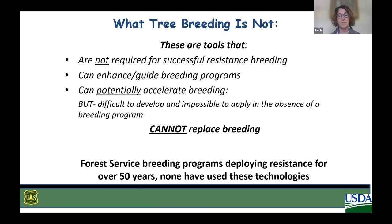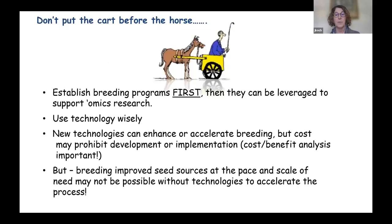The Forest Service has had breeding programs deploying resistance for over 50 years, and so far none have used these technologies. It's important not to put the cart before the horse when talking about breeding programs. What you're doing today — identifying trees that can potentially be parent trees and establishing that breeding program first — is the most important part. We need to think about cost-benefit analysis because if a technology is too costly to develop or implement, it may not be a good investment.